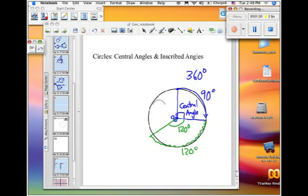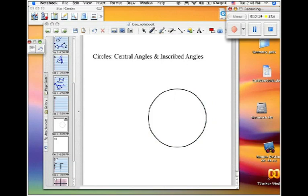If I have a central angle of 20 degrees, the arc that is formed is also 20 degrees. If I have a central angle that is 180 degrees,